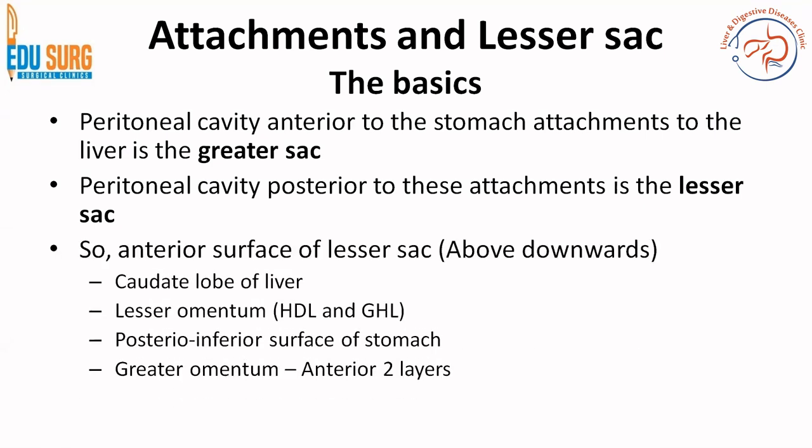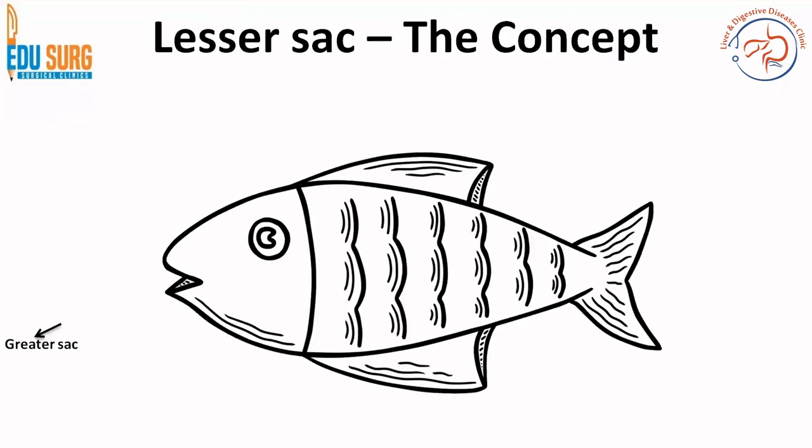When we want to identify the anterior surface of the lesser sac, we know that it is posterior to these attachments. So from above downwards, the structures are: the caudate lobe of the liver, the lesser omentum which includes the gastro-hepatic ligament and the hepatoduodenal ligament, the posterior inferior surface of the stomach, and the greater omentum in its anterior two layers.